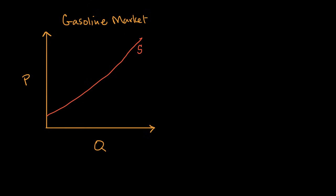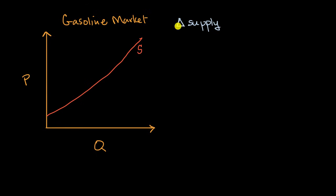We're going to continue our discussion on the law of supply, and in particular, in this video, we're going to get a little bit deeper to make sure we understand the difference between a change in supply — I'm using the Greek letter delta here as shorthand for change in supply — versus a change in quantity supplied.